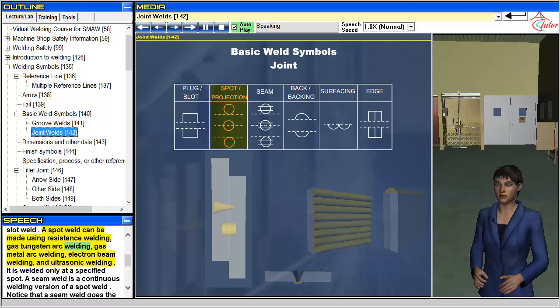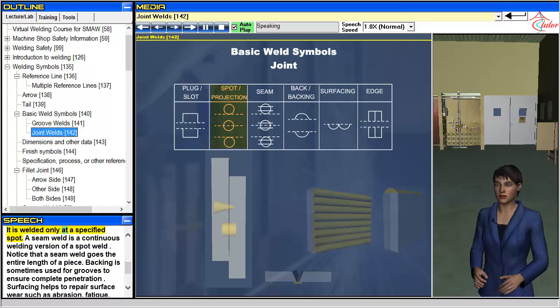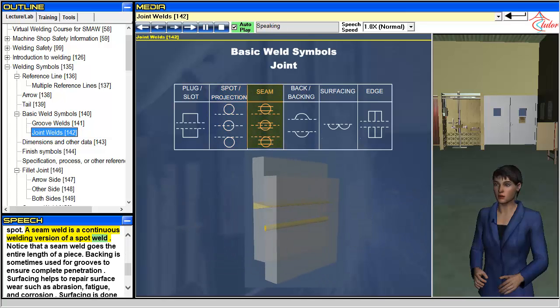A spot weld can be made using resistance welding, gas-tungsten arc welding, gas-metal arc welding, electron beam welding, and ultrasonic welding. It is welded only at a specified spot. A seam weld is a continuous welding version of a spot weld.